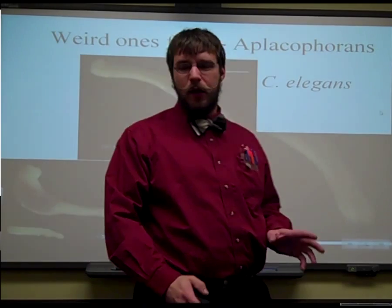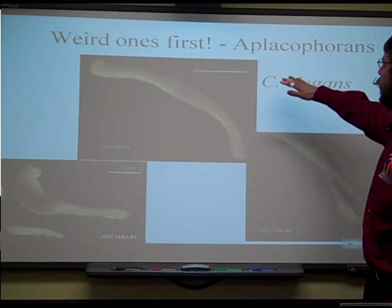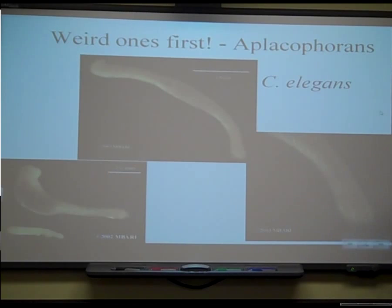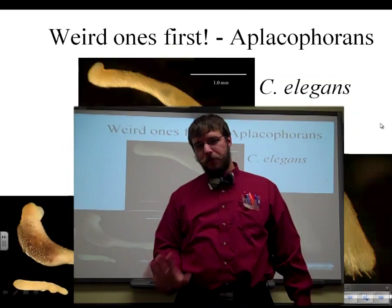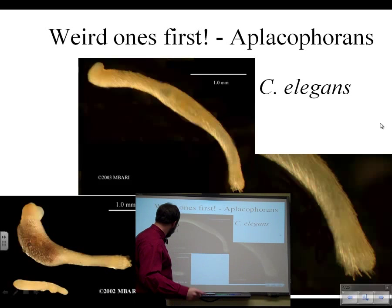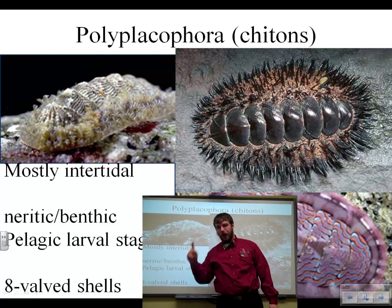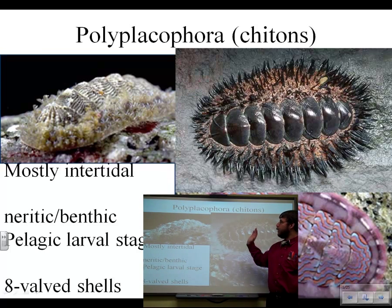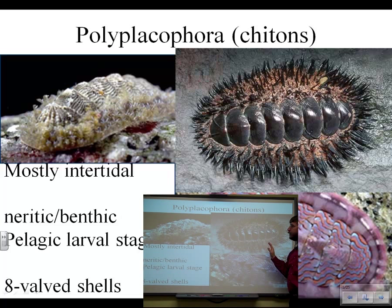Let's look at some of the weird groups. The aplacophorans look worm-like and are the most basal group, very similar to the annelid worms. They look a lot like worms but they're not worms — they're molluscs. There's also Polyplacophora, which has many placophores all over it. These are commonly known as the chitons. They look a lot more like insects, but remember insects are arthropods — these are molluscs.